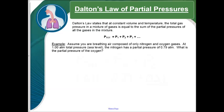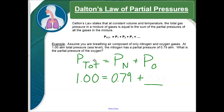All right, now Dalton's Law of Partial Pressures. Dalton's Law states that at constant volume and temperature, the total gas pressure in a mixture of gases is equal to the sum of all of the partial pressures. All right, now for an example, let's assume you're breathing air that only has nitrogen and oxygen in it. At 1.00 atmospheres of total pressure, which means we're at sea level, the nitrogen has a partial pressure of 0.79 atmospheres. We can figure out how much the partial pressure of oxygen is. First we start with our formula. P total is P of nitrogen plus P of oxygen, and then we substitute in what we know. If the total pressure is 1 atmospheres and the pressure of the nitrogen is 0.79, then the pressure of the oxygen must be 0.21.